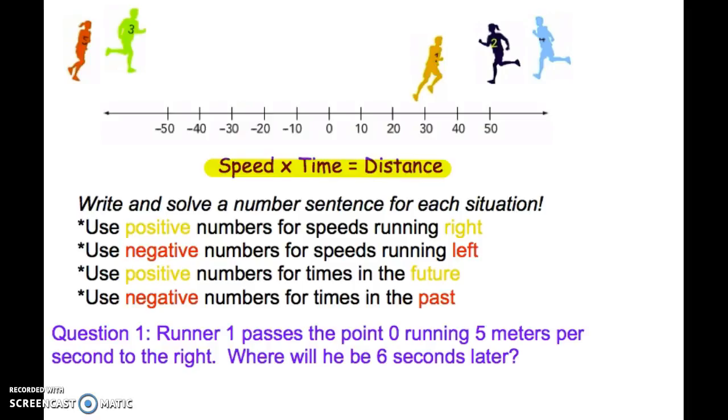And we're going to write it as a math equation. So our speed is five meters per second, and he's going right, so we're going to say that's a positive number. So five times his time. He's run for six seconds, and we want to know where he is six seconds later, so in the future. So that's positive six. And notice, he is going to end up at 30. So five times six equals 30. That's probably the simplest example.